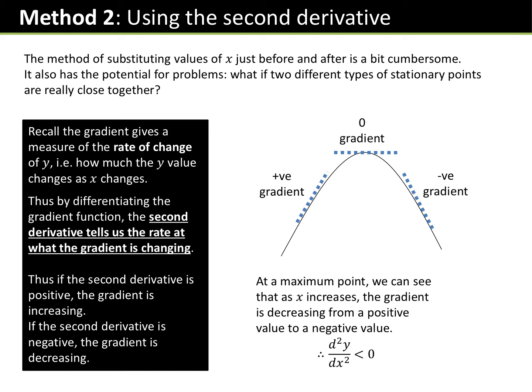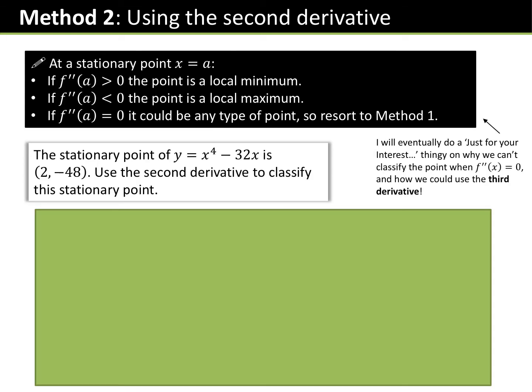This is by using the second derivative. At a maximum point, as x increases, the gradient decreases from positive to negative. To find a maximum, if the second differential is less than zero, you have found a maximum. Here are your three rules: if d²y/dx² > 0, it's a minimum; if d²y/dx² < 0, it's a maximum; if d²y/dx² = 0, we're not sure, so go back to substituting values.